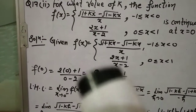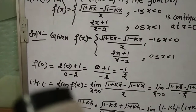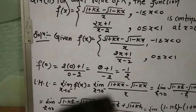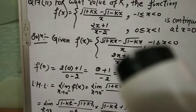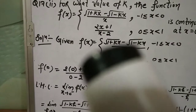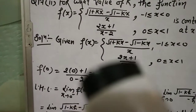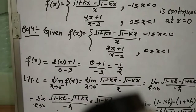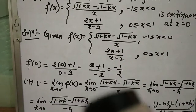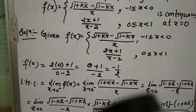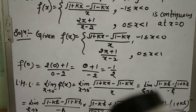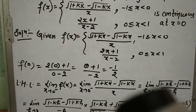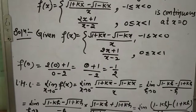इसके बाद left hand limit निकालेंगे क्योंकि finite and real value आई है। Left hand limit: limit x→0⁻ f(x). x < 0 के लिए function √(1+kx) minus √(1-kx) divided by x लेना है। x की जगह 0-h यानी -h put करेंगे। Numerator बनेगा √(1-kh) minus √(1+kh), denominator -h। h→0 पर 0/0 form बनेगी।